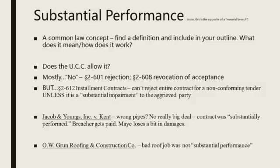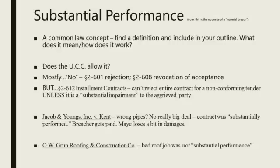Jacob & Youngs was the coho pipe case — a common law services contract for construction. Somebody inadvertently put in the wrong pipe. With the wrong piping, does that allow the person who ordered the construction not to pay, or does it require the contractor to rip down half the building to put in the right pipes? The pipes were a personal preference but not that different; the ones used were not that different. So using the wrong pipe was nevertheless substantial performance, which may allow some reduction in damages, but still required the party that ordered the service to pay for the construction.